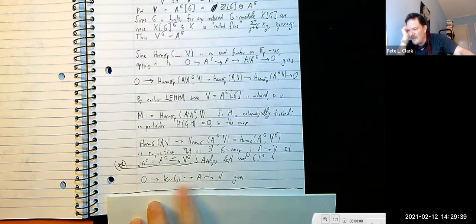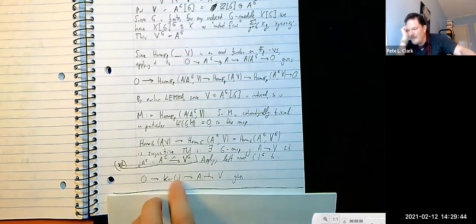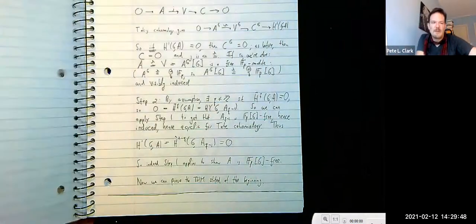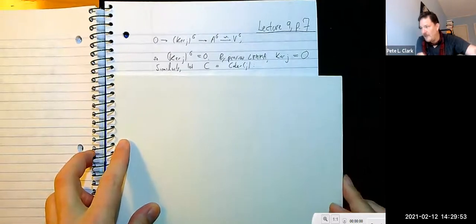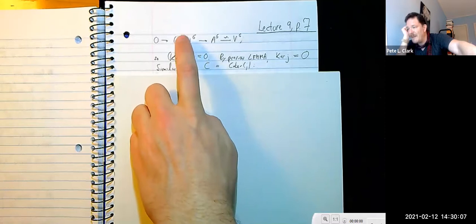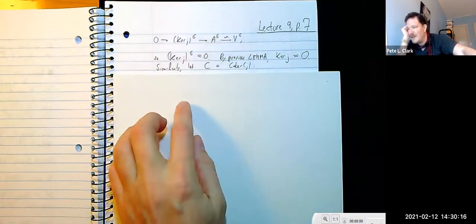We haven't used the twisting yet — that should come in. We apply the invariants functor, which is left exact. From the kernel sequence — since left exact sequences remain exact after applying the functor — we get an exact sequence.